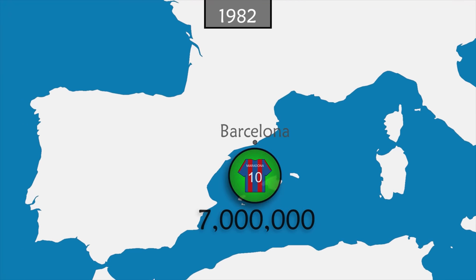The event is marred by the match between West Germany and Austria, called the 'Disgrace of Gijón': after a German goal, the two teams — sure to be qualified — slow down their game, eliminating Algeria. On the other hand, France and West Germany face each other in a match full of twists, and it's the first of the competition to end in a penalty shootout. In the final, Italy wins against West Germany.